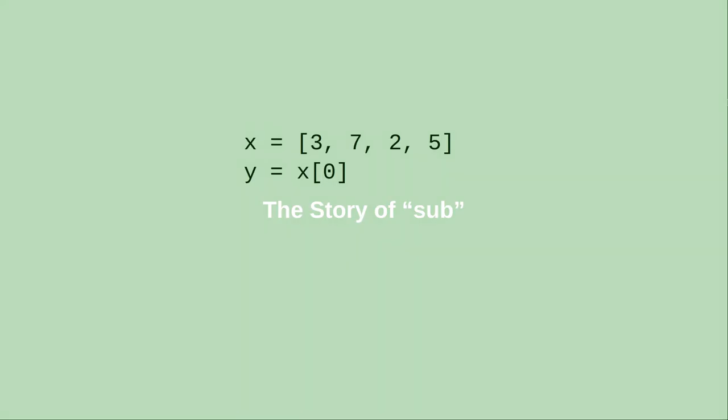Throughout the videos, you may have noticed me reading code like this as x becomes the list 3, 7, 2, 5, and y becomes x sub 0. What's that sub all about?